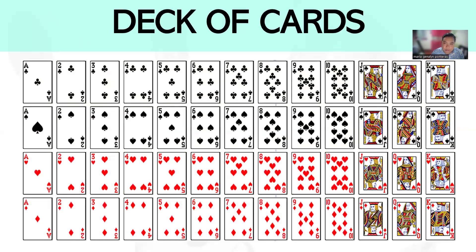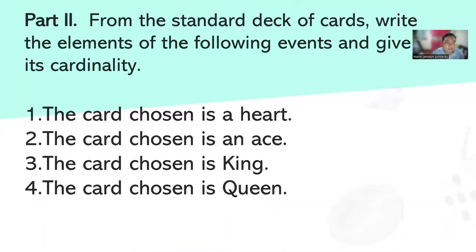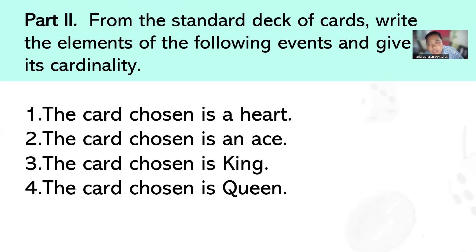Let's talk about deck of cards. In a standard deck of cards there is no joker — we only have 52 cards in four groups: clubs, spades, hearts, and diamonds. Each group has ace, two, three, four, five, six, seven, eight, nine, ten, jack, queen, and king — 13 cards each. So 13 multiplied by four gives 52 cards total.